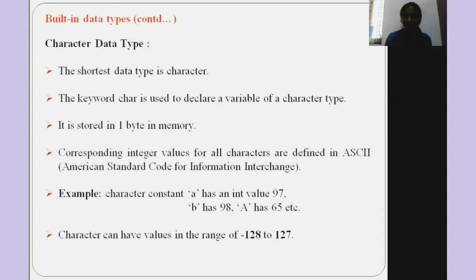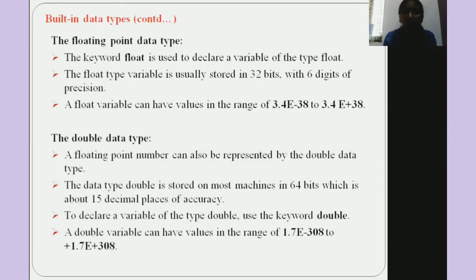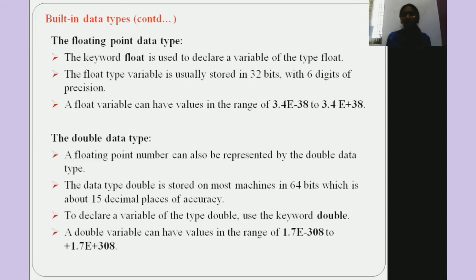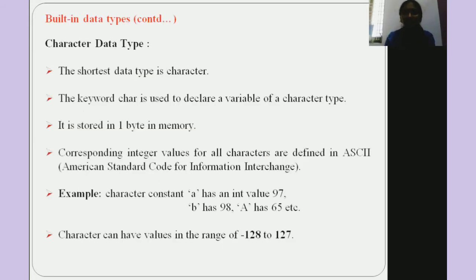The floating data type accepts decimal values. The keyword is 'float', and its range is 3.4e-38 to 3.4e+38. The double data type serves the same purpose — it also stores decimal values — but the major difference is that double has more accuracy and a longer range compared to float.